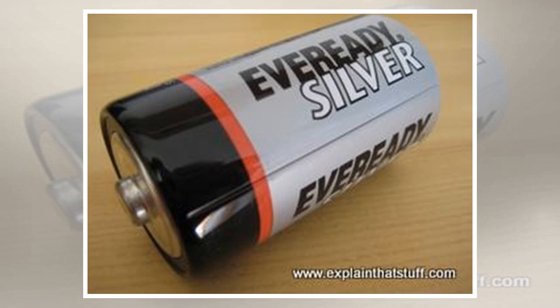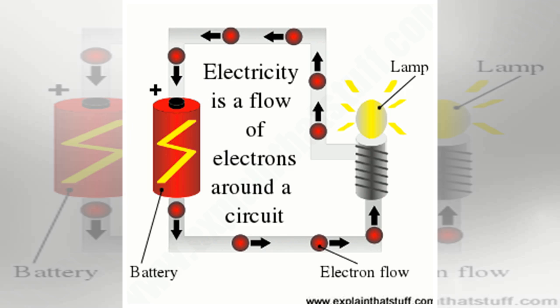Materials such as copper metal that conduct electricity, allowing it to flow freely, are called conductors. Materials that don't allow electricity to pass through them so readily, such as rubber and plastic, are called insulators.